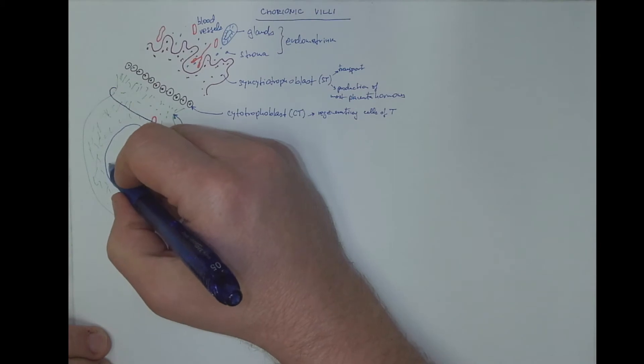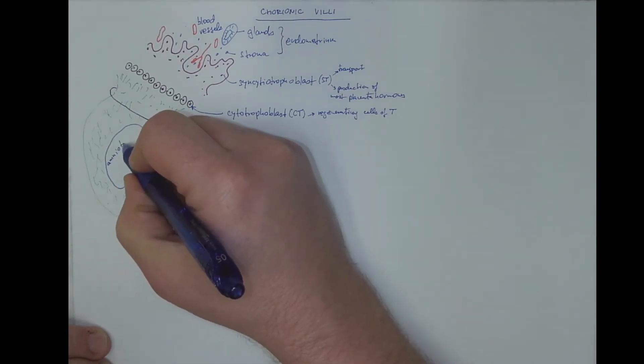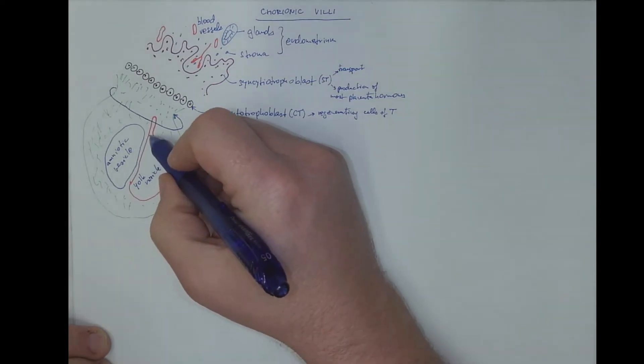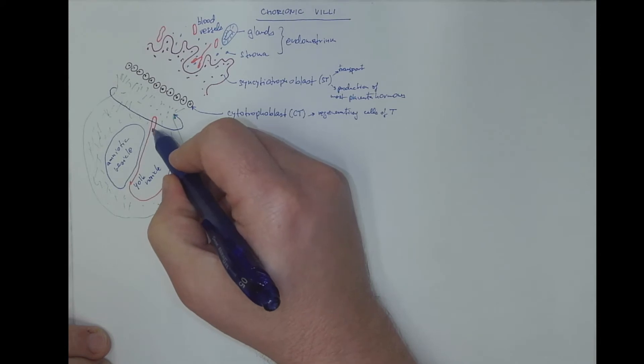We have mentioned the amniotic vesicle that is touching the york vesicle. The york vesicle is sending a finger-like blind-ending projection called allantois.